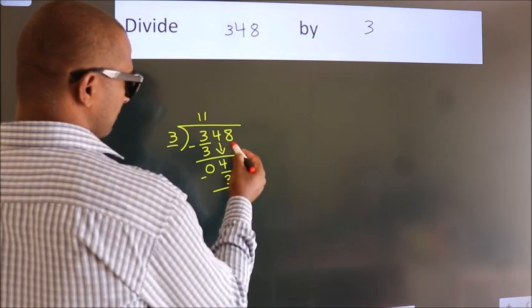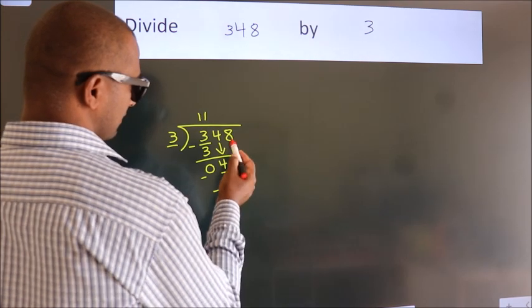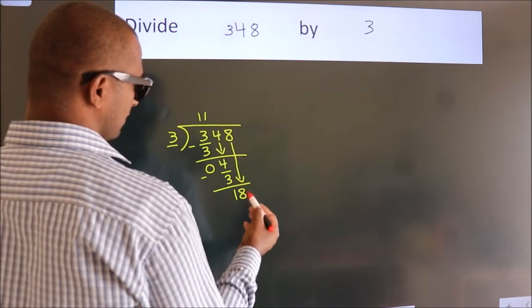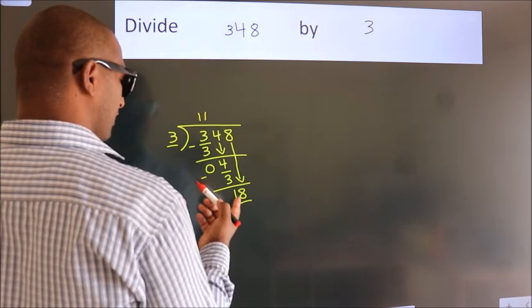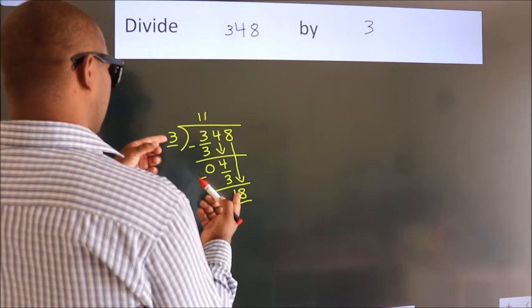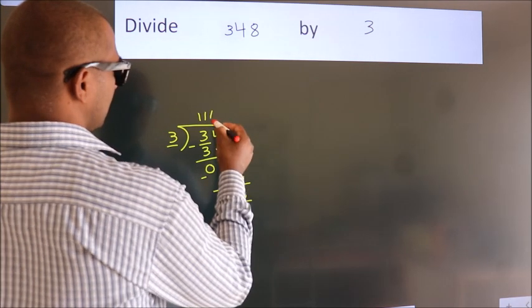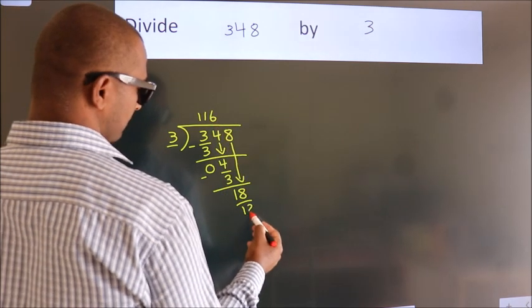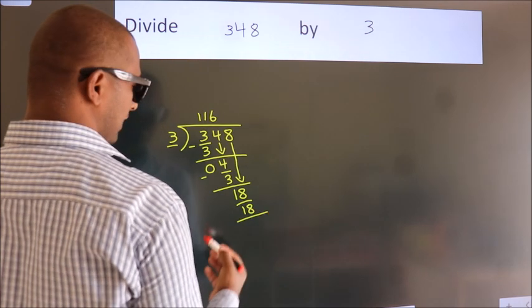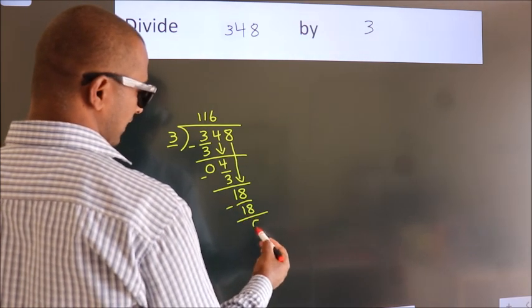After this, bring down the next number, so 8 down, so 18. When do we get 18? In the 3 table, 3 times 6 is 18. Now we subtract and we get 0.